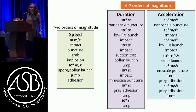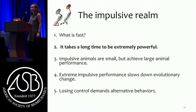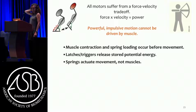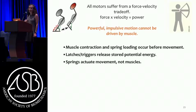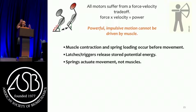It takes a long time to be extremely powerful. This is where we start to see that maybe it's not all great being super impulsive. All motors suffer from a force-velocity trade-off, beautifully illustrated in muscle: force times velocity is power. You can get a lot of force and a little velocity, or a lot of velocity and a little force - but you can't have both. That means that powerful impulsive motion cannot and is not driven by muscle directly, ever - it's impossible. Muscle contraction and spring-loading occur before the movement; latches and triggers release the potential energy, then springs actuate the movement, not muscle.